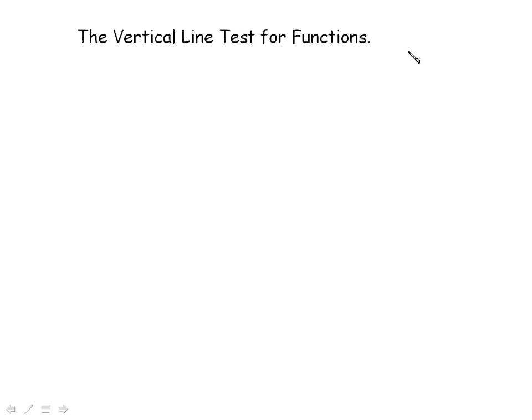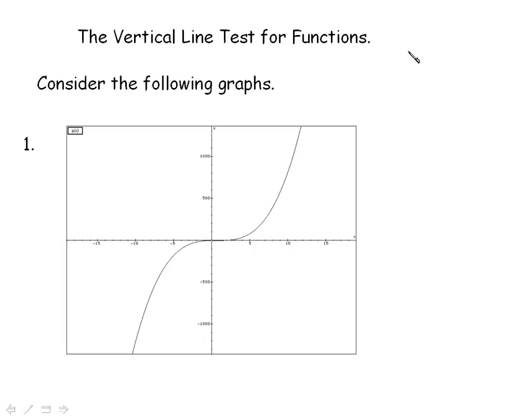The vertical line test for functions you undoubtedly have seen before. And this does refer to a graphical analysis of a potential function. We're going to look at a couple graphs and just see whether these are, in fact, functions or not. And the vertical line test just means that you draw a vertical line through. And at any point that you do go through, you simply make sure that you only intersect in one place. You cannot intersect in more than one place.